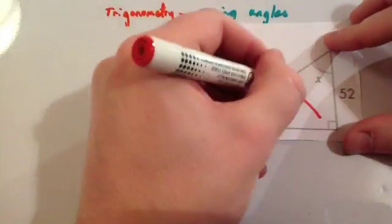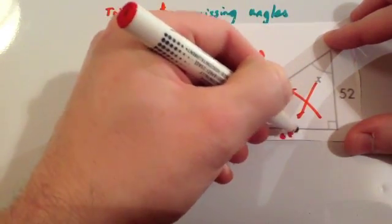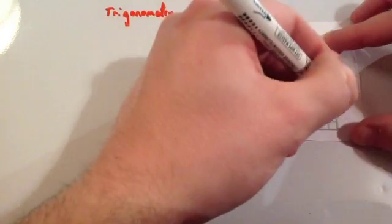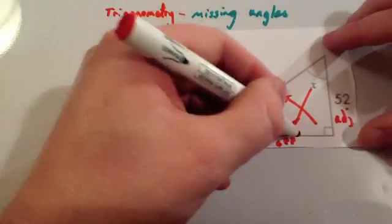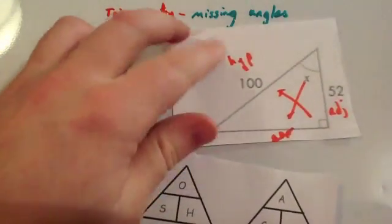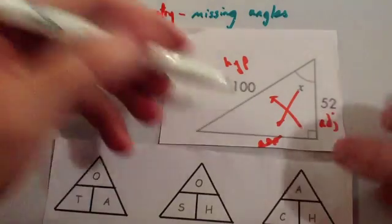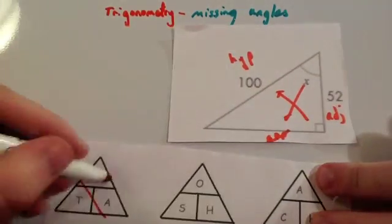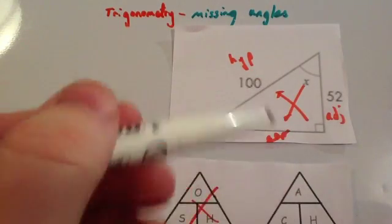Let's have a look at another example. Here's another right angle triangle. Let's label the sides: that's the hypotenuse, this side here would be the opposite because it's opposite the angle, and the other one is the adjacent. Step 2: cross off the side you haven't been given — you haven't been given the opposite. Step 3: draw out your triangles and cross off the ones that have the opposite, because we don't want the opposite. We want the adjacent and the hypotenuse, so we're left with the triangle containing adjacent and hypotenuse.